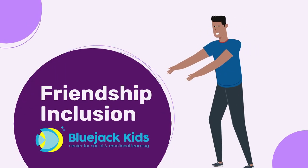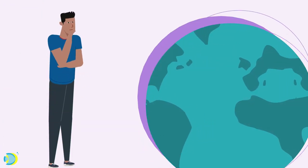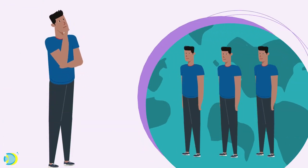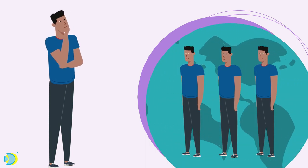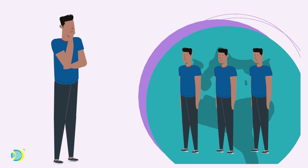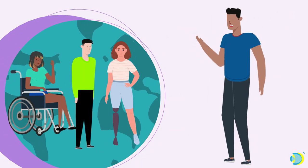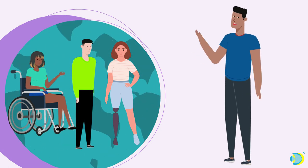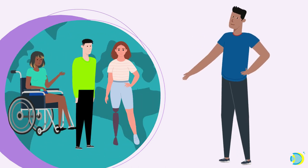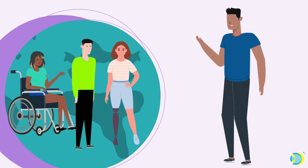Friendship Inclusion by Bluejack Kids. Imagine our world and how boring it would be if we were all the same and thought the same way and did the same things. Each one of us is unique and special and that's what makes this world so amazing. Some of us might have physical disabilities or others might have learning disabilities or differences, and that's beautiful.